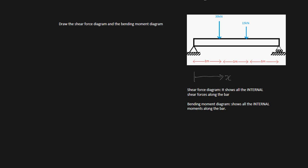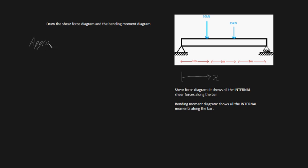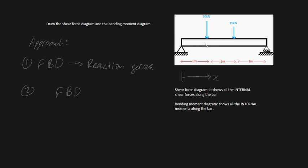Let's go into an approach to solving this problem. Here is our approach. First things first, we're going to draw a free body diagram of our entire system so we can calculate the reaction forces. Once we've got our reaction forces, we have to draw multiple other free body diagrams. To figure out the internal shear forces and internal moments, we need to make three separate cuts — one here, one here, and one here. So we'll make three free body diagrams: one for 0 < x < 1 meter, one for 1 m < x < 2 m, and one for 2 m < x < 3 m.